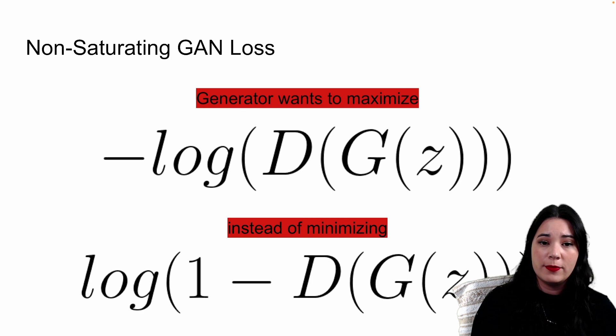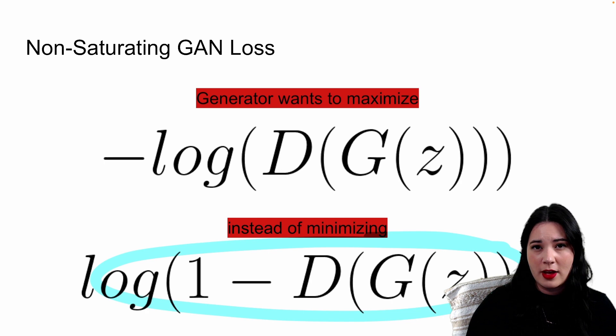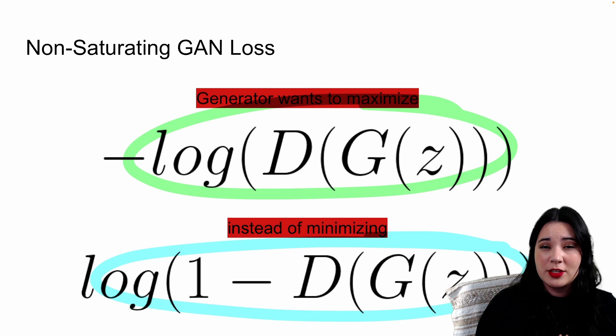One proposed fix is to switch the way the generator measures success. In the original GAN loss function, the generator tries to minimize the probability of an image being classified as fake. We can reframe this as the generator wanting to maximize the probability that the image is real. This non-saturating loss helps make generator updates more stable so it can still learn to trick the discriminator.